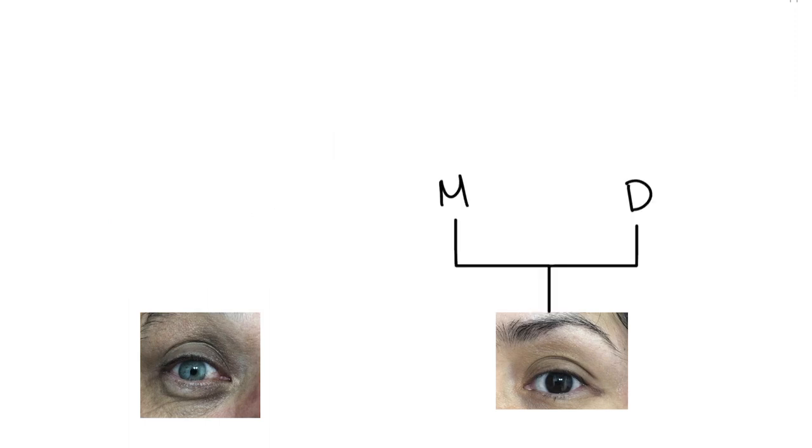For my father's parents, his mom has green eyes and his dad has brown. But his dad's mom has light eyes, making his genotype heterozygous, meaning my dad's eyes are homozygous, with two lowercase e's representing the recessive light color. My mother's parents both have brown eyes, meaning she has homozygous dominant.